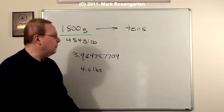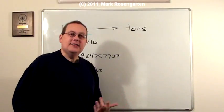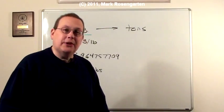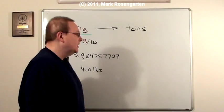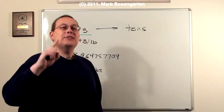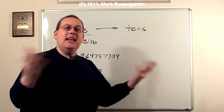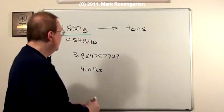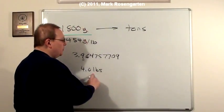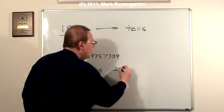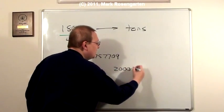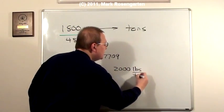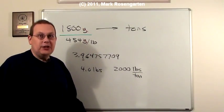Now for the next step, we've got to go from pounds to tons. The question didn't talk about metric tons, so I'm going to assume we're talking about regular tons. It takes 2000 pounds to make a ton. And again, you could look that up pretty much anywhere. So, 4.0 pounds, and there are 2000 pounds per ton.